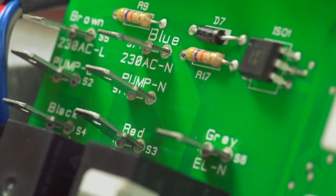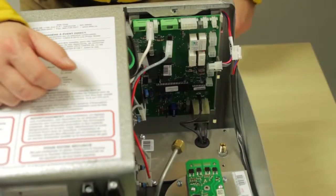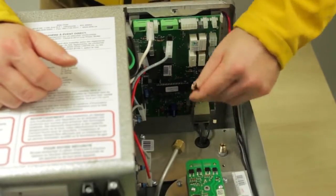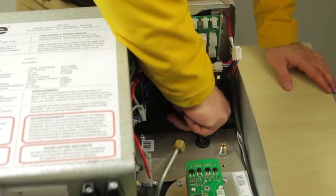Note each cable is labelled according to the colour of the wire. Now you can disconnect the flame sensor and the two ignition cables.